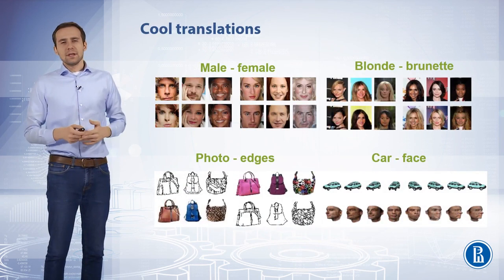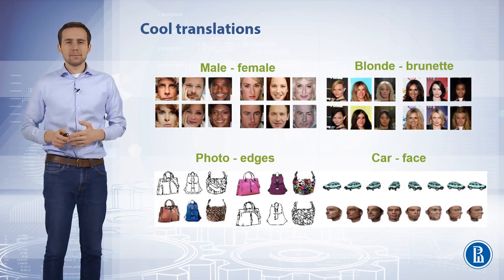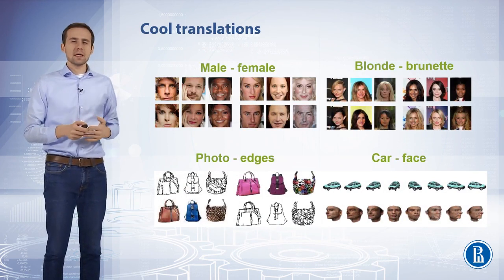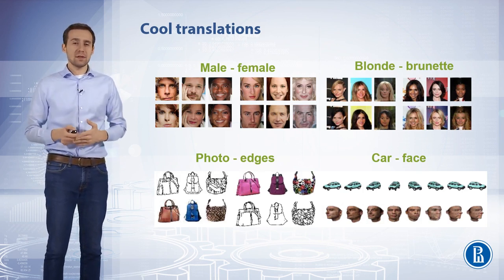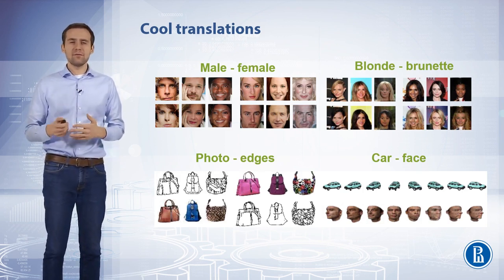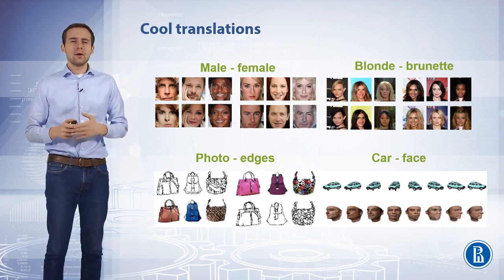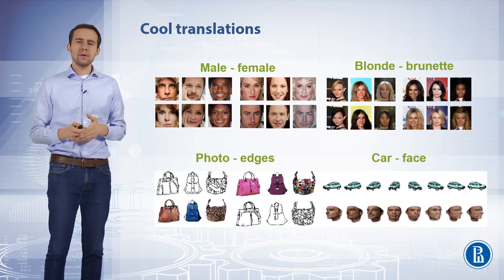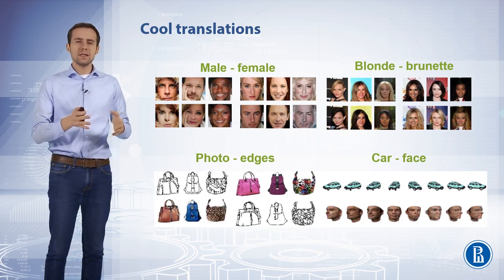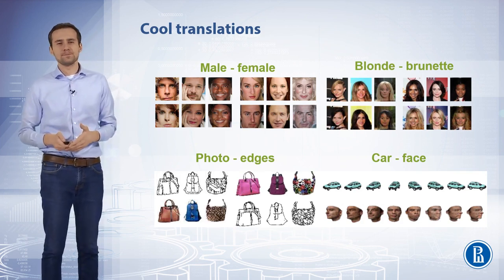The resulting obtained translations are shown in the slide. The DiscoGAN architecture is able to successfully pair male to female images, blonde to black hair, or cars at different viewing angles to faces at the same respective viewing angles.